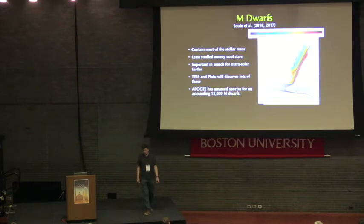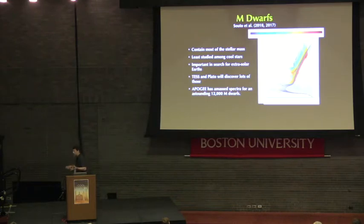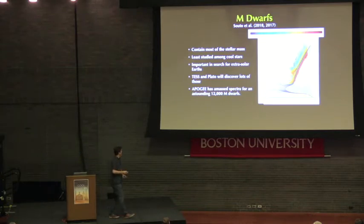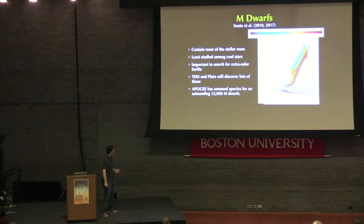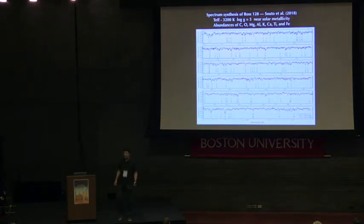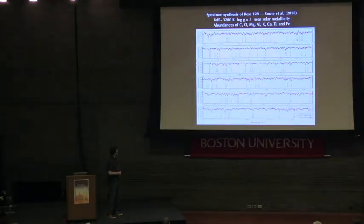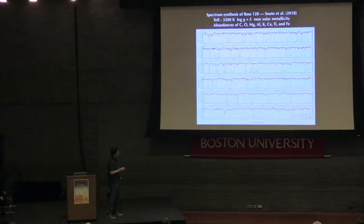Jumping quickly to M-dwarfs. M-dwarfs are important because the vast majority of stellar mass in the galaxy is in the form of M-dwarfs, and they are important for the search for extrasolar Earths — TESS and PLATO will discover lots of those. APOGEE has mass spectra for an astounding 12,000 M-dwarfs. A recent result published by Diogo Soto, a Brazilian student, shows spectrum synthesis of an M-dwarf yielding temperature, log g, and multiple elemental abundances. Multiply that by 12,000.